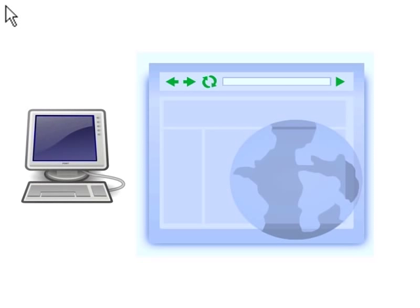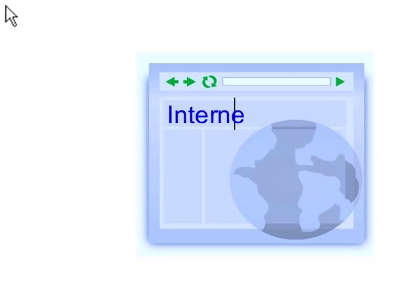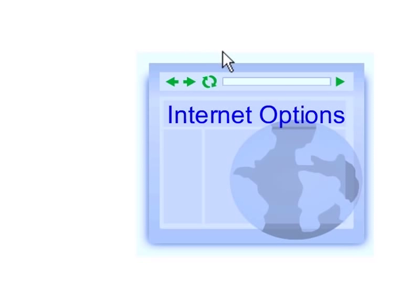An Internet browser is an application your computer uses to access the web. You can adjust the way your browser interacts with the web to better control your security online.